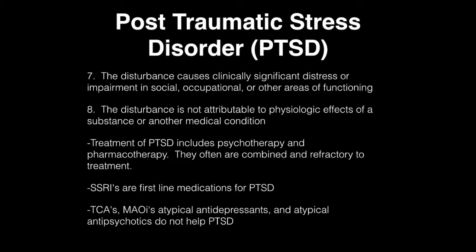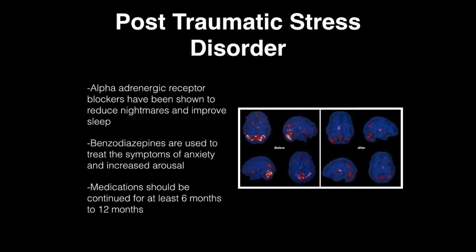Tricyclic antidepressants, MAOIs, and atypical antidepressants have also been used. Alpha-adrenergic receptor blockers have been shown to reduce nightmares and improve sleep. Benzodiazepines are used to treat symptoms of anxiety and increased arousal. Medications should be used and continued for at least 6 to 12 months.